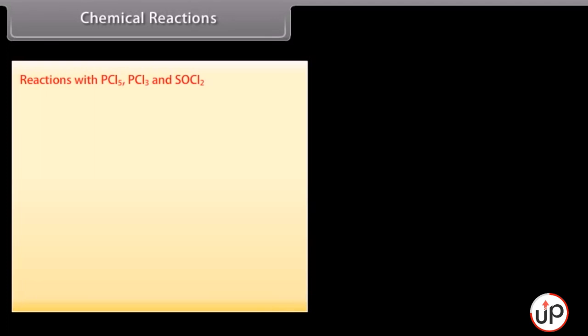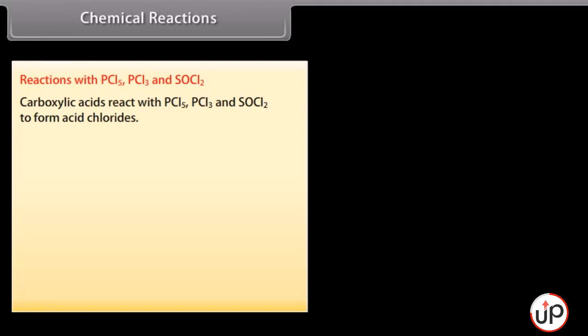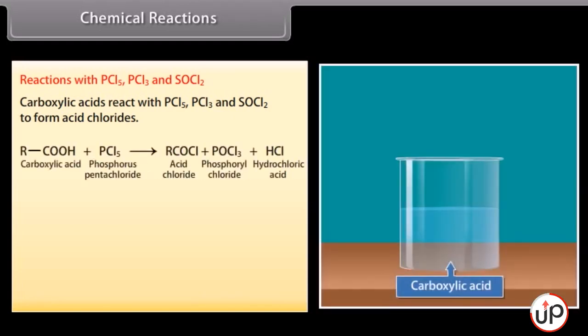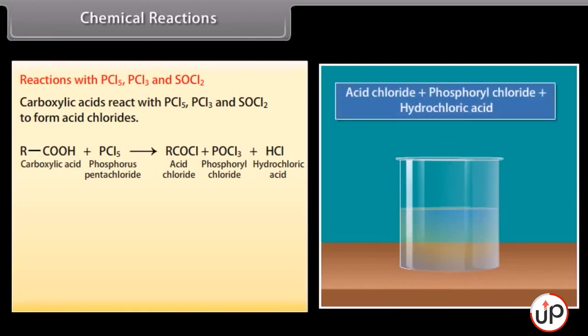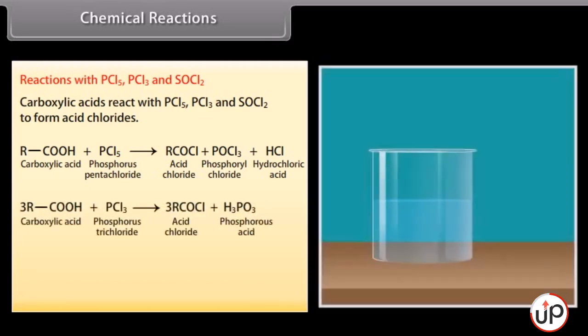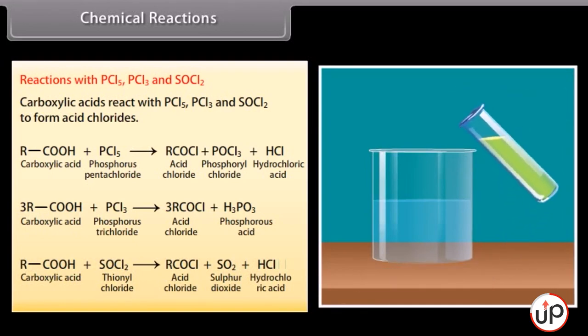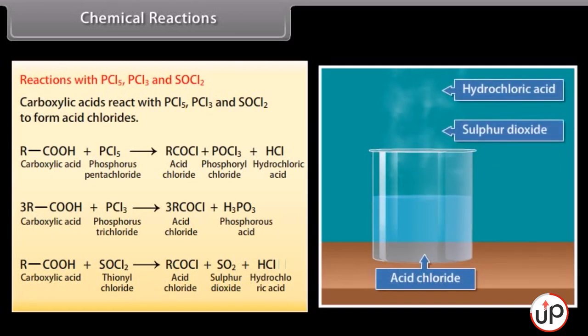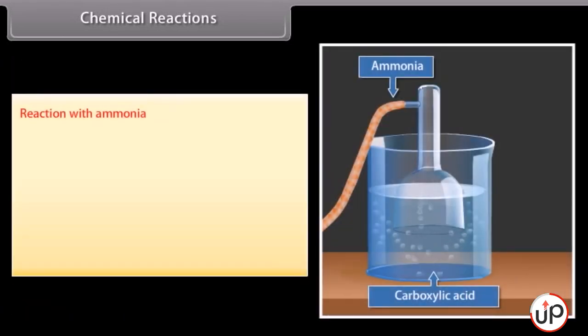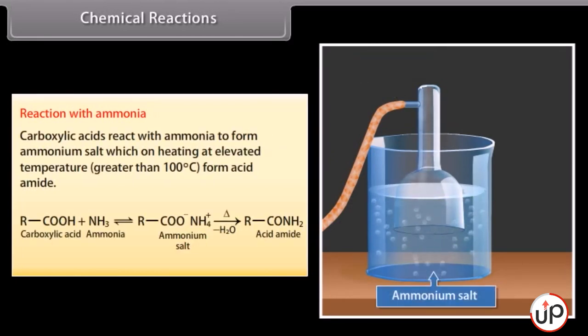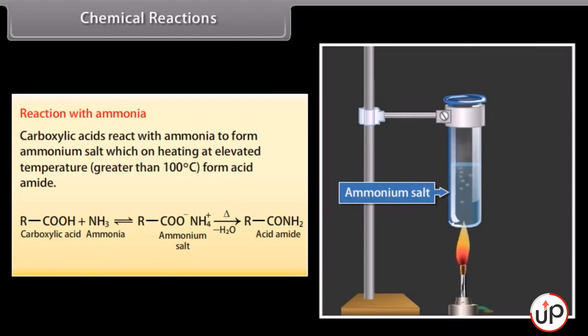Reactions with phosphorus pentachloride, phosphorus trichloride and thionyl chloride: carboxylic acids react with PCl5 to form acid chlorides, phosphoryl chloride and hydrochloric acid. Carboxylic acids react with PCl3 to form acid chlorides and phosphorous acid. Carboxylic acids react with thionyl chloride to form acid chlorides, sulfur dioxide and hydrochloric acid. Reaction with ammonia: carboxylic acids react with ammonia to form ammonium salt, which on heating at elevated temperature (greater than 100°C) forms amide.